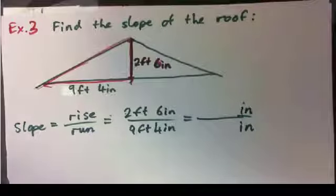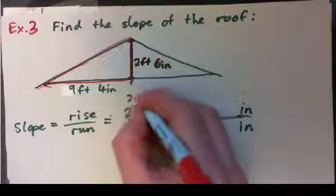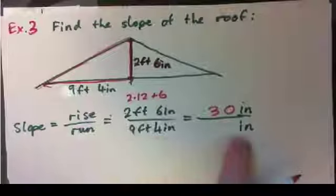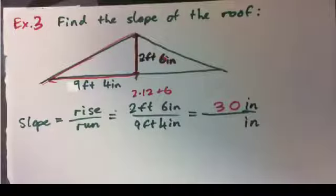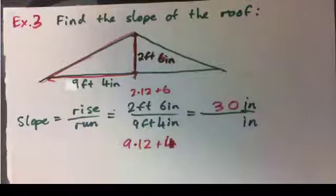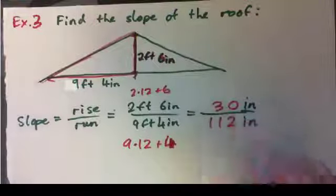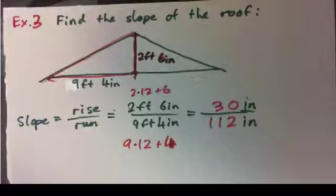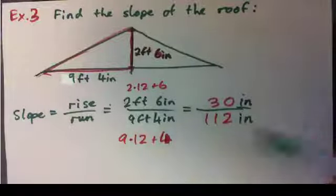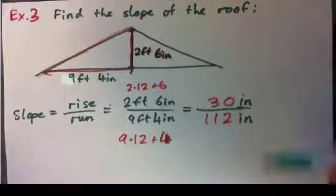Converting: 2 feet 6 inches = 2 × 12 + 6 = 30 inches. And 9 feet 4 inches = 9 × 12 + 4 = 108 + 4 = 112 inches. Now put the fraction 30 over 112 in lowest terms, and give it as a decimal and a percentage.